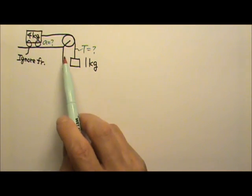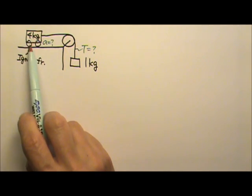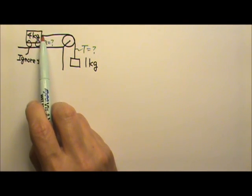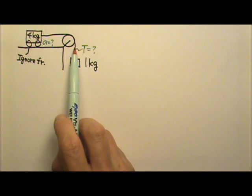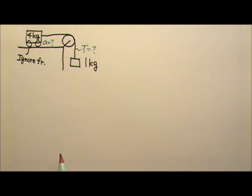Here we have a table with a pulley. This 4 kg cart is attached to a string and this string goes over the pulley with a 1 kg box hanging underneath.